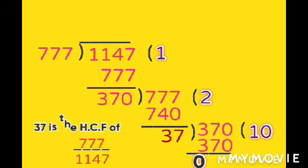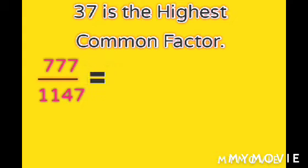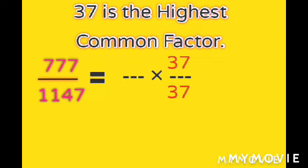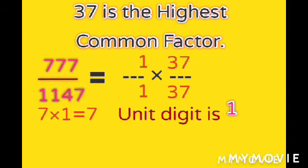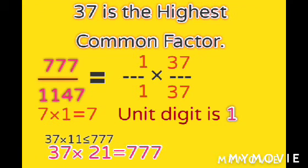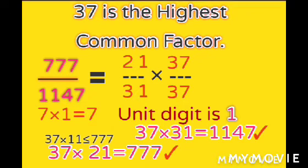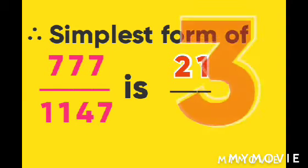Now, using HCF = 37: 37 into x equals 777 — looking at the unit digit, 7 into 1 equals 7, so x is 21. Then 37 into x equals 1147, so x is 31. Cancelling 37 and 37, our answer is 777 by 1147 equals 21 by 31.